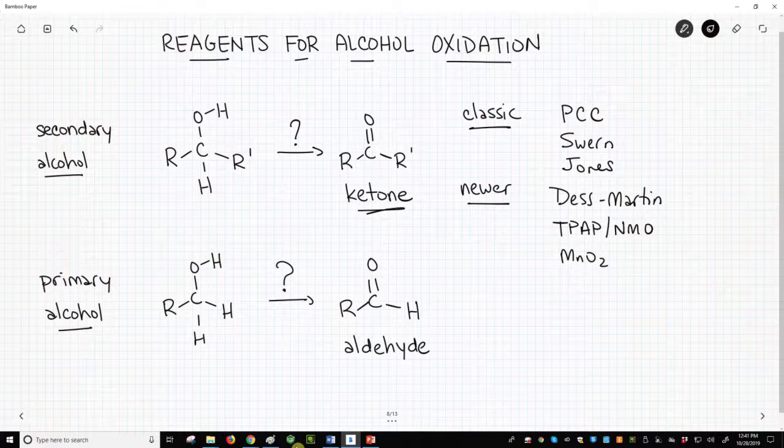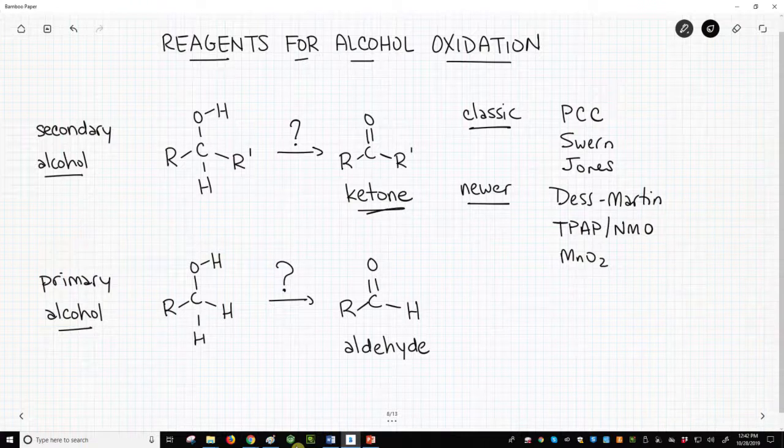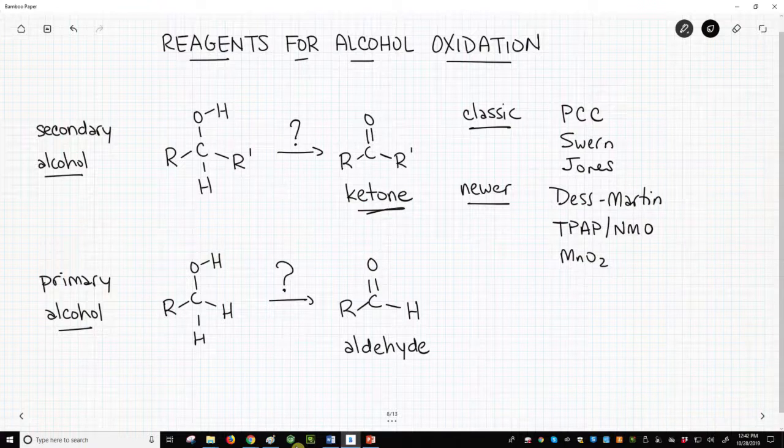To oxidize a secondary alcohol to a ketone, just write out your secondary alcohol and put one of the reagents over the arrow and draw your ketone product. Note that many of these reagents include metals. During the reaction, the metal is reduced as the alcohol carbon is oxidized. These are redox reactions.